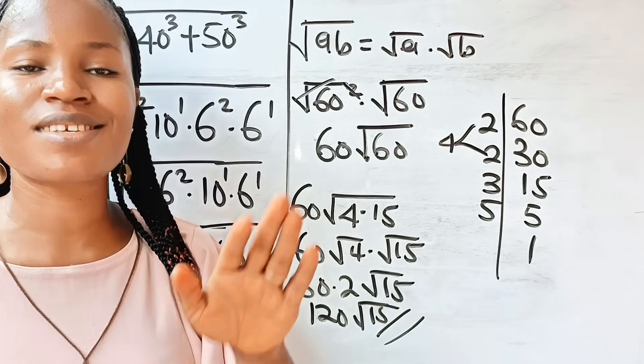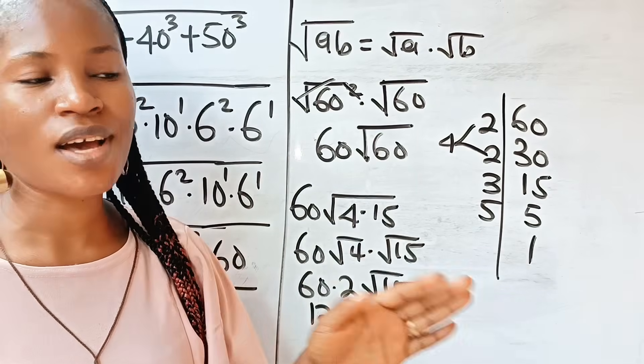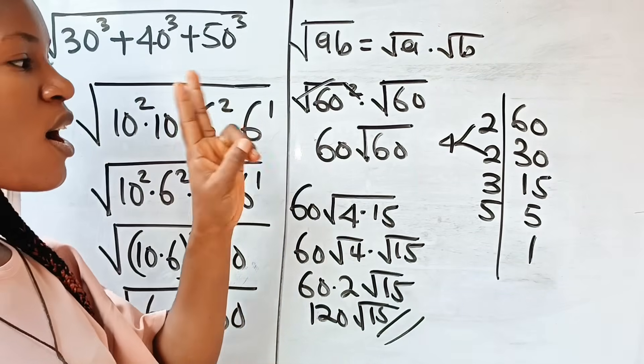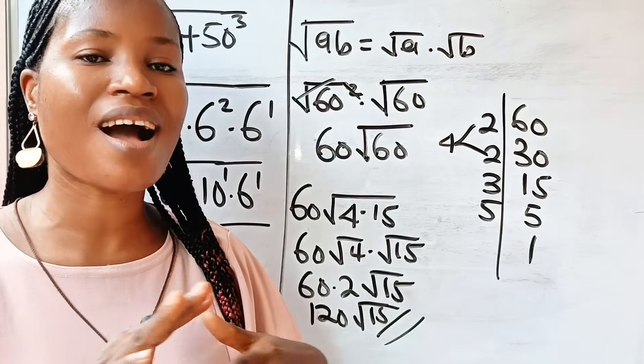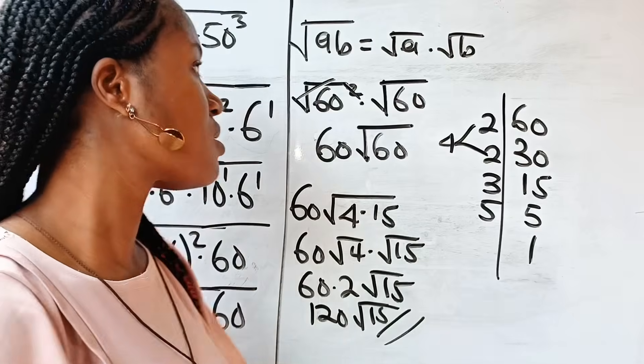This gives us 120 root 15. That is the answer from the first method. Now let's go to the second method, which is very easy and very fast.